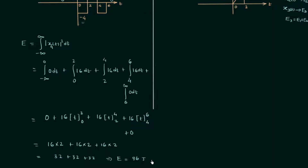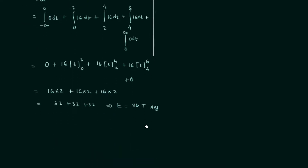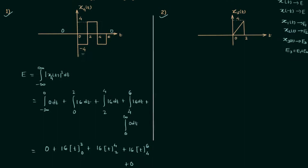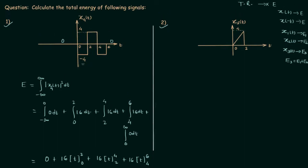The total energy is 96 joules. Since 96 is a finite value, this implies signal X4(t) is an energy signal, and since the energy is finite, the average power is equal to zero. This is the solution to the first problem using the conventional approach for university exams.